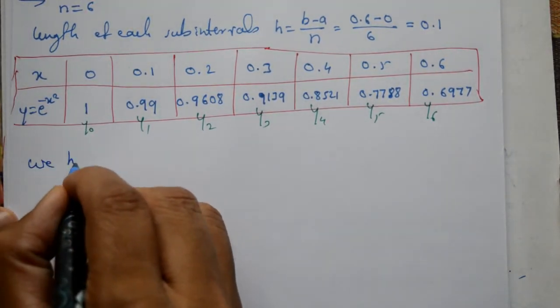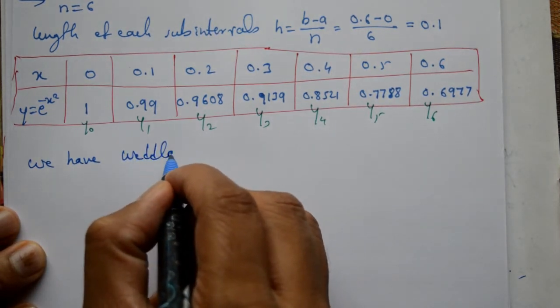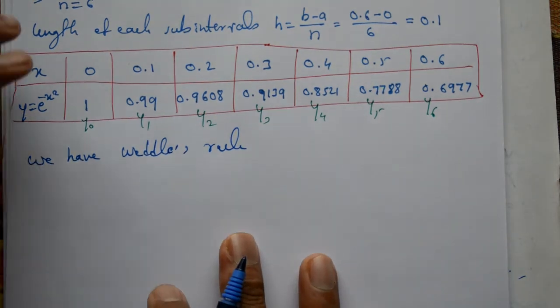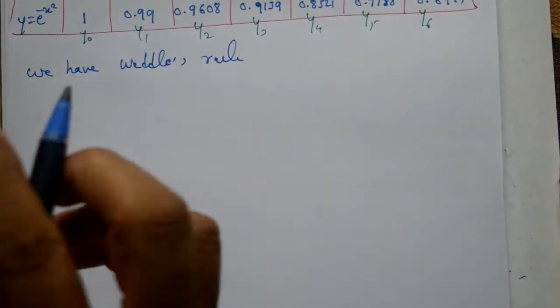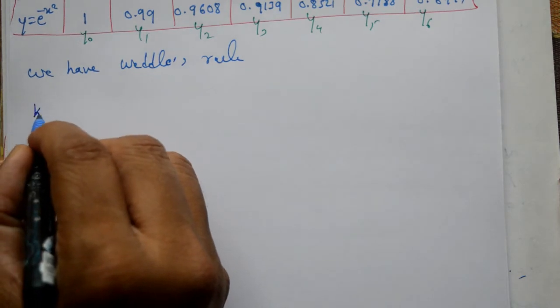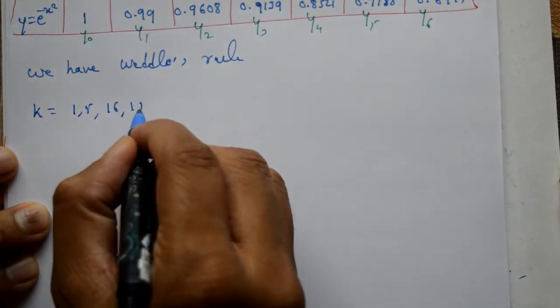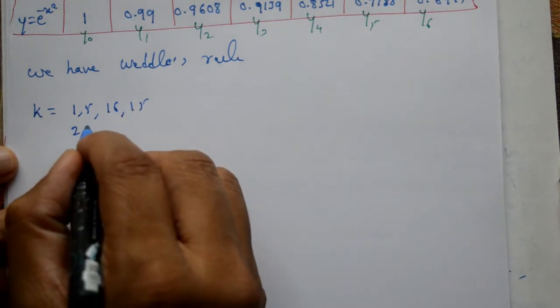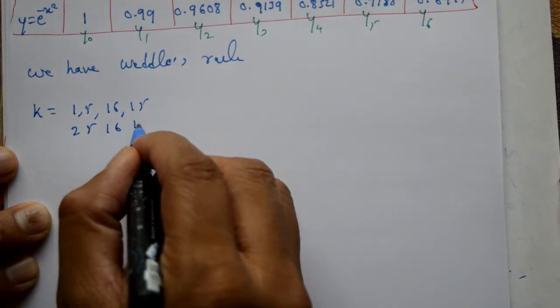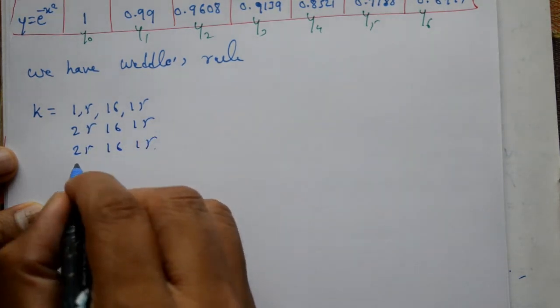Now for Weddle's rule, you need to remember one step. Take k equal to: 1, 5, 1, 6, 1, 5, then 2, 5, 1, 6, 1, 5, then 2, 5, 1, 6, 1, 5, and so on.